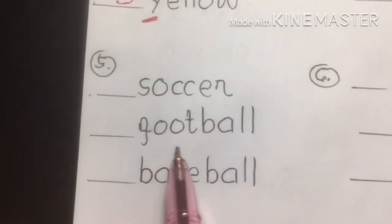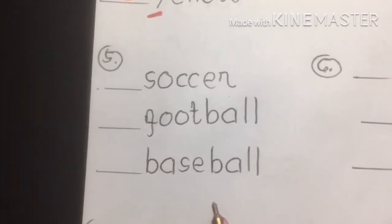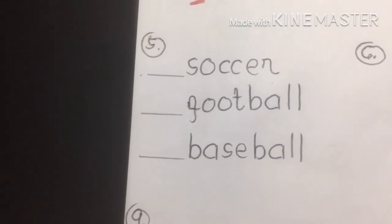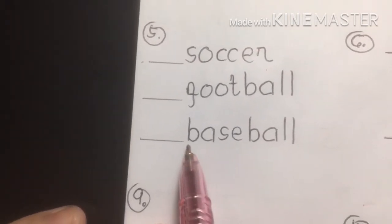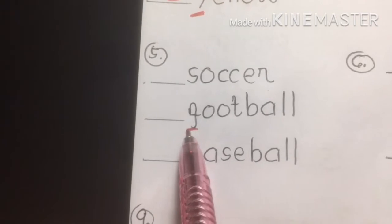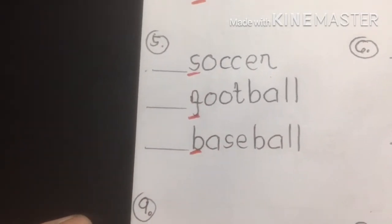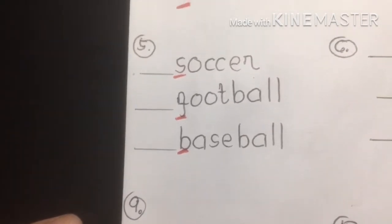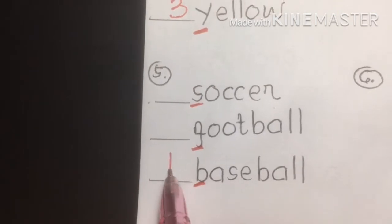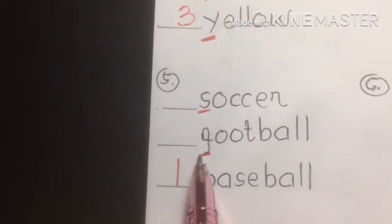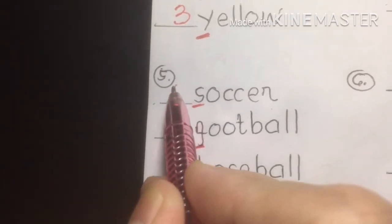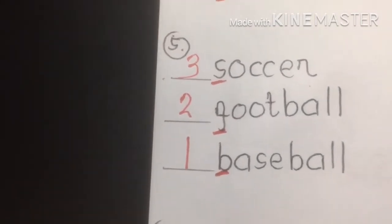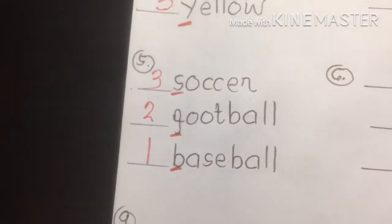Number five: soccer, football, baseball — names of sports. Underline the initial letters: B, F, and S. B is number one — baseball. F comes before S, so football is second, and soccer is third. The answer: baseball, football, soccer.